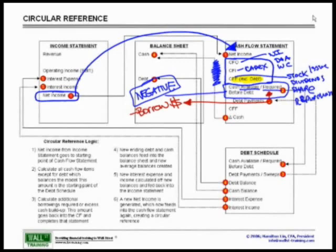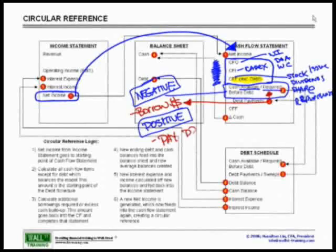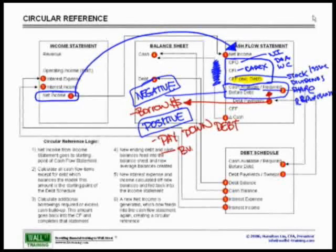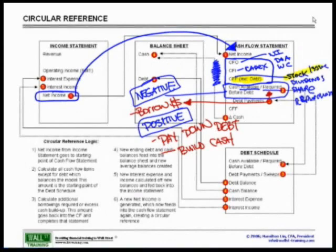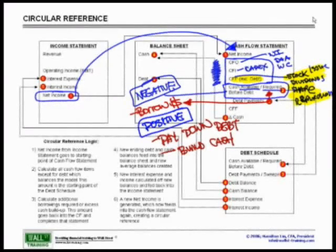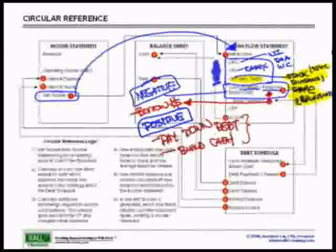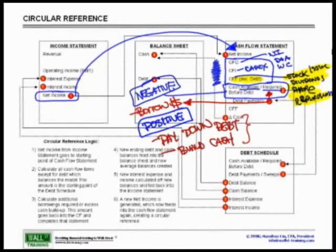However, if this amount, cash available, is a positive number, this means that they have actually generated funds. They have generated cash from all of their previous activities. If this is a positive number, the CFO now has two options: they can either decide to pay down all the debt or part of the debt, or they can decide to build cash. Recall that stock issuances as well as dividends and share repurchases have already been incorporated and included into our financial model. Once we have done that, we now really only have these two options: pay down debt or build your cash.